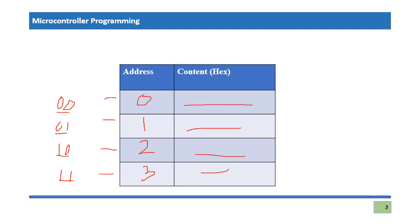So an address is a pattern of zeros and ones that represents or points towards a specific location in memory. In this example, we have a 2-bit address, and it refers to four number of slots.